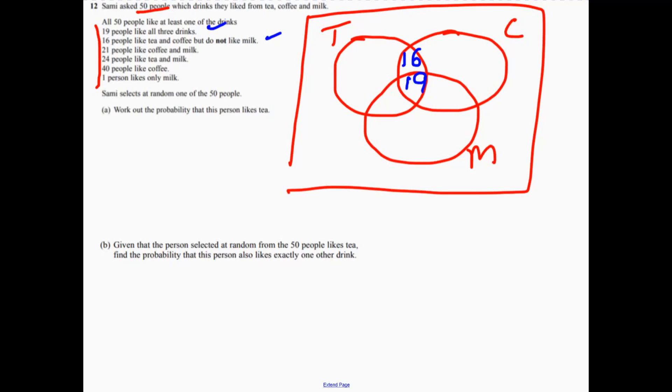Now, 21 people like coffee and milk. That doesn't mean 21 is going to go there. 2 is going to go there because it says 21 people like coffee and milk, so that includes the 19. So now we've accounted for that one.